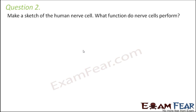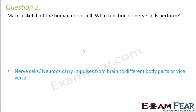Question number two: make a sketch of the human nerve cell — what function do nerve cells perform? A human nerve cell, also known as a neuron, carries impulses from the brain to different body parts, or from different body parts to the brain. That's how the brain coordinates with different parts of our body. For example, suppose you touch a surface which is very hot.